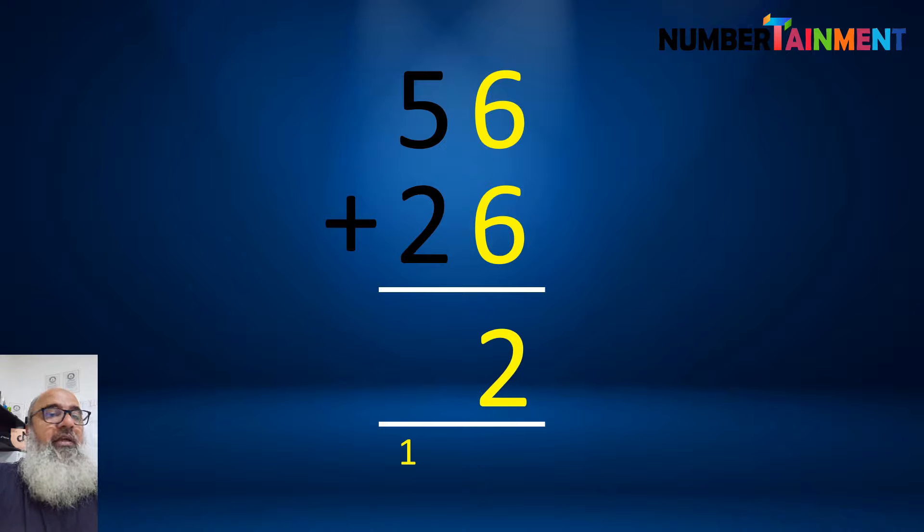Then adding the tens, 5 plus 2 is equal to 7. And adding the carried one, we get 8. So the answer is 82.